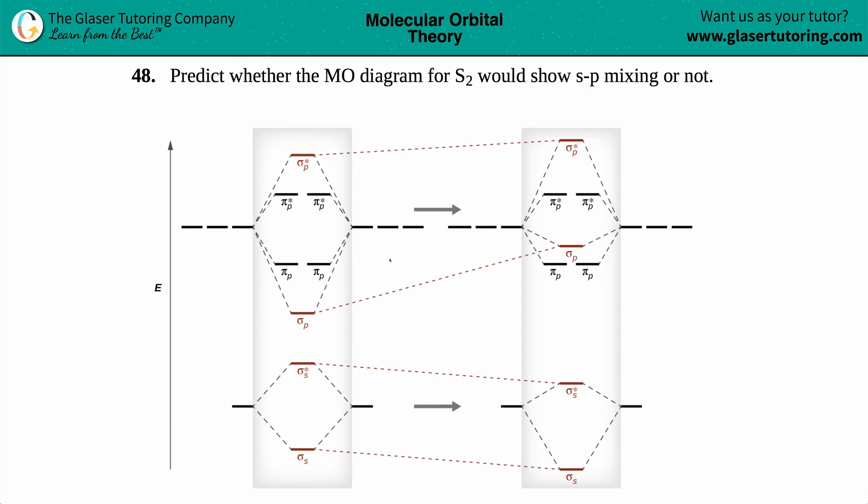Number 48: Predict whether the molecular orbital diagram for S2 would show sp mixing or not. Now sp mixing comes from where you are located in a group. There are two different types of molecular orbitals - there's this molecular orbital that's kind of nice and symmetrical, and then there's this mess that's not really nice when you are mixing it up.